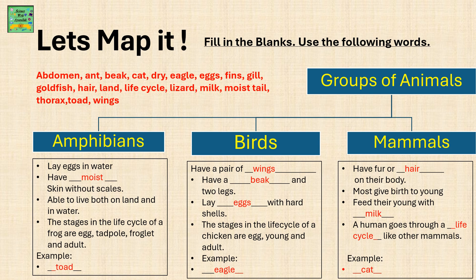Birds. They have a pair of wings. They have a beak and two legs. They lay eggs with hard shells. The stages in the life cycle of a chicken, which is an example of birds, are egg, young ones, and then an adult. Another example is an eagle.